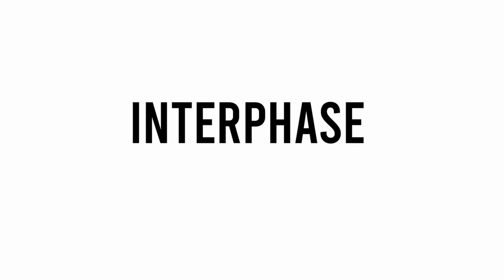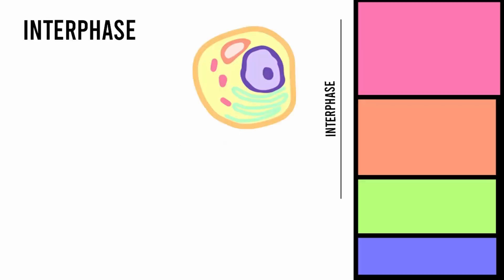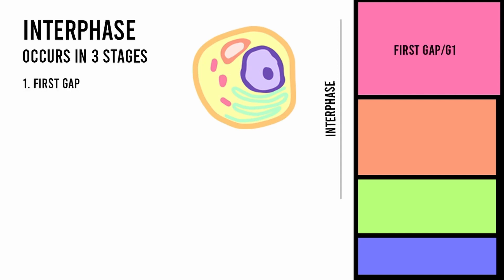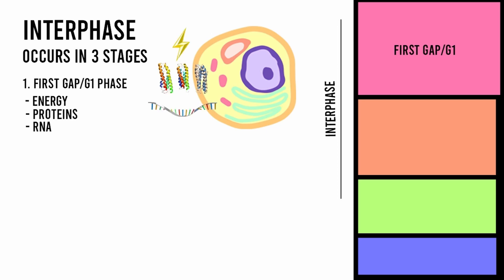Let's start out by investigating the interphase. Interphase occurs in three stages. The first stage is known as the first gap, or the G1 phase. During the G1 phase, the cell accumulates the energy, proteins, RNA, and other building blocks needed for DNA synthesis, which occurs in the next stages.